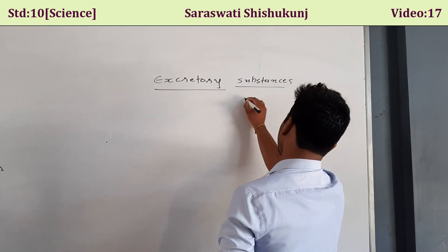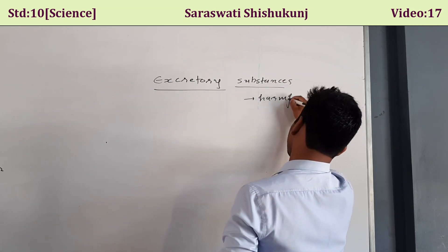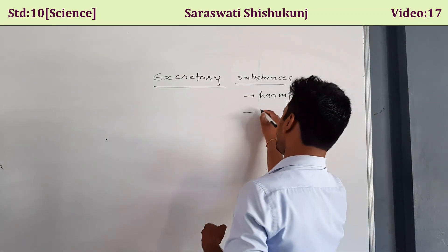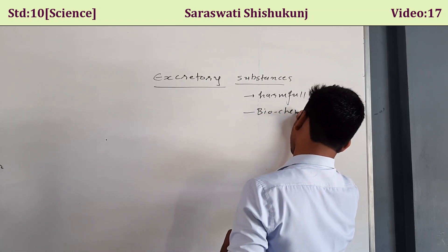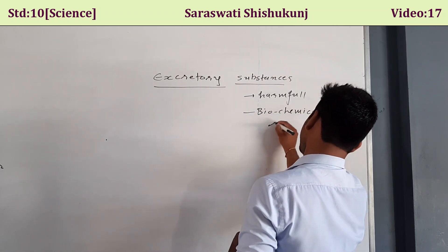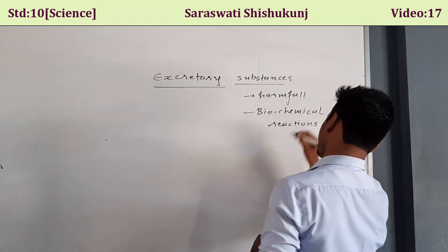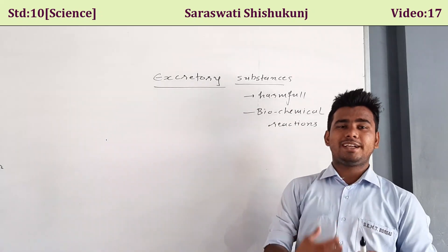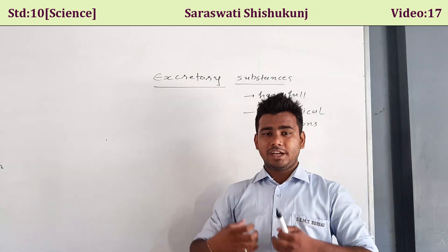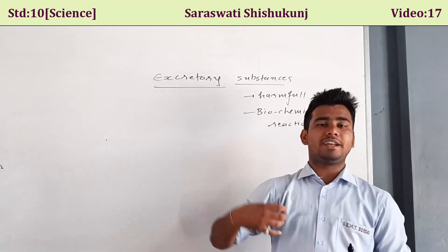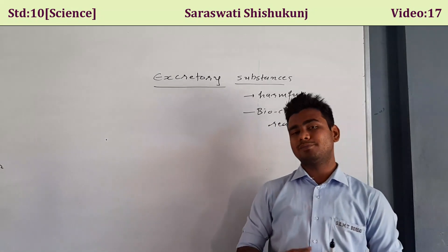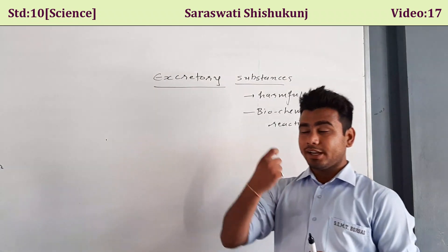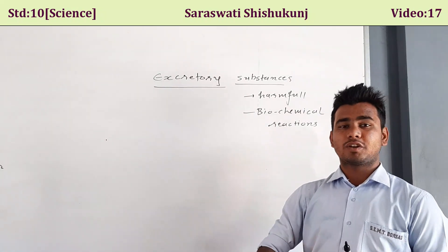Excretory substances are the harmful substances generated in our body during biochemical reactions — like in the process of digestion, the food we eat gets digested, absorbed into the blood, and we get energy. But beside that, there will also be some substances produced as a by-product that are harmful. The removal of these harmful substances is called excretion.